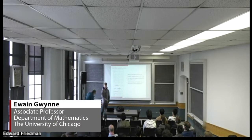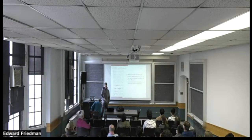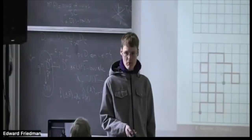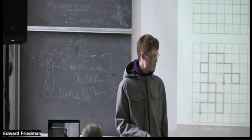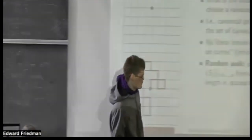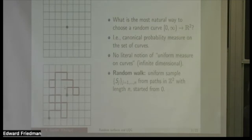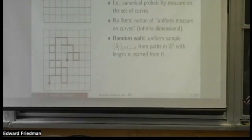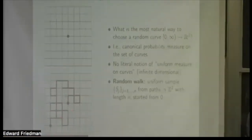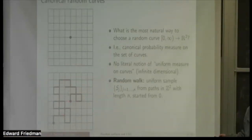The space of all curves in R2 does not have an obvious uniform measure that one can put on it. One way to define a canonical probability measure on curves in R2 is to discretize the problem. Instead of looking at curves in R2, we look at curves in the square lattice — all paths in the grid which start at the origin and go for n steps staying along the grid lines.